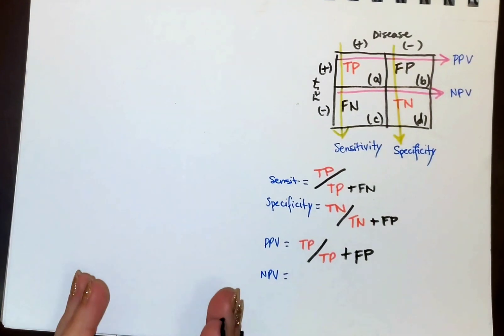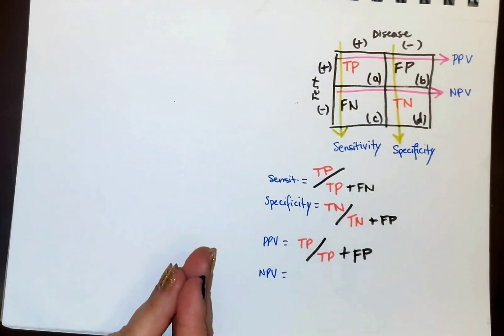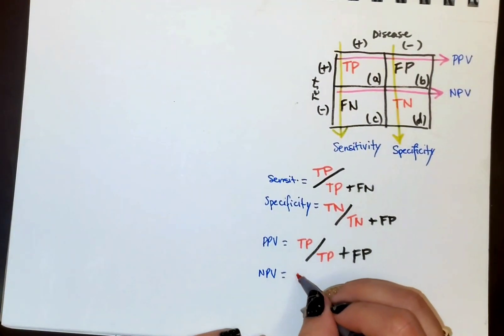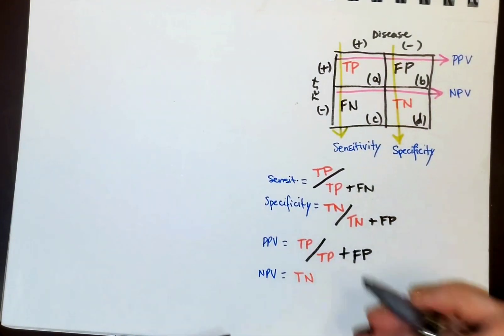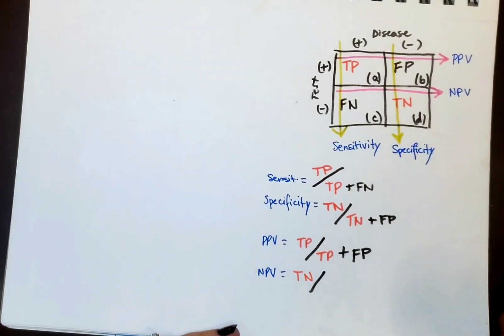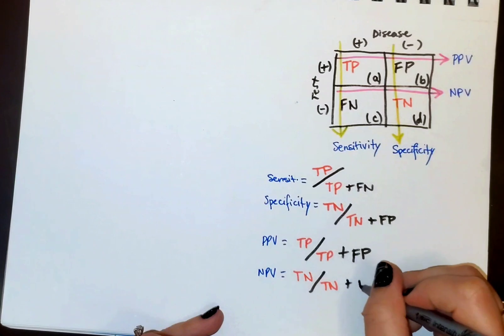So negative predictive value will be the opposite. It's the probability that a person who tested negative actually doesn't have the disease. So again, we're going to start with the true value, which would be true negative on top over true negative plus false negative.